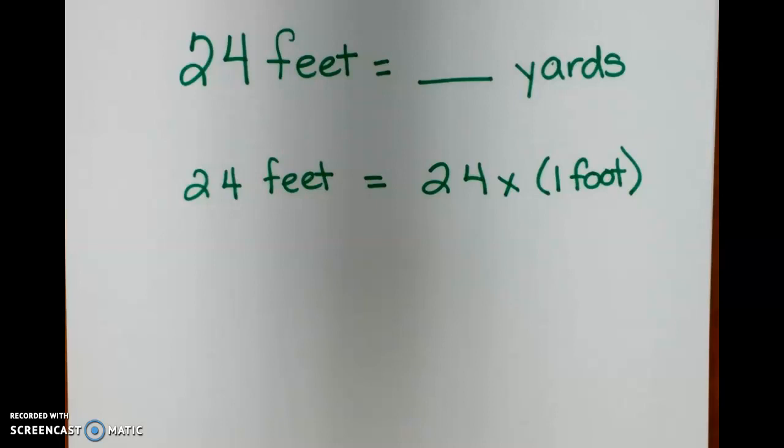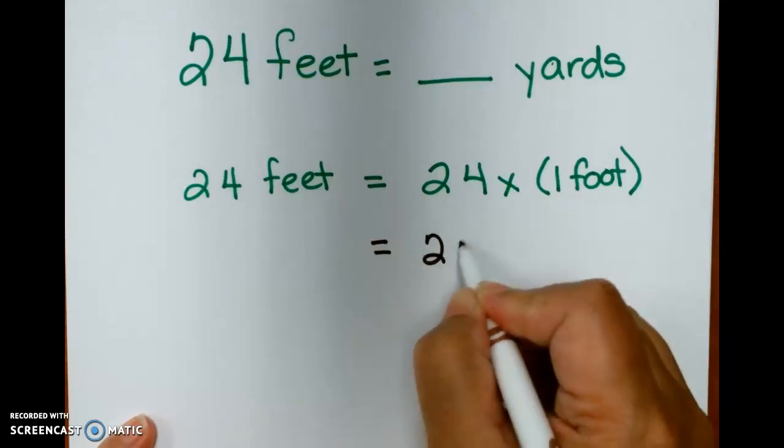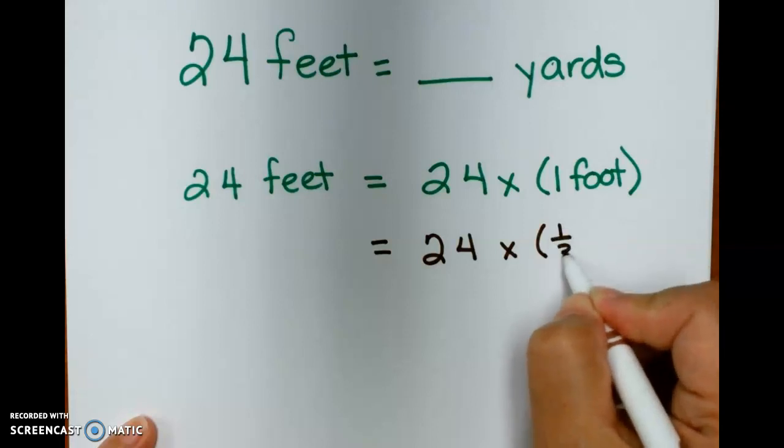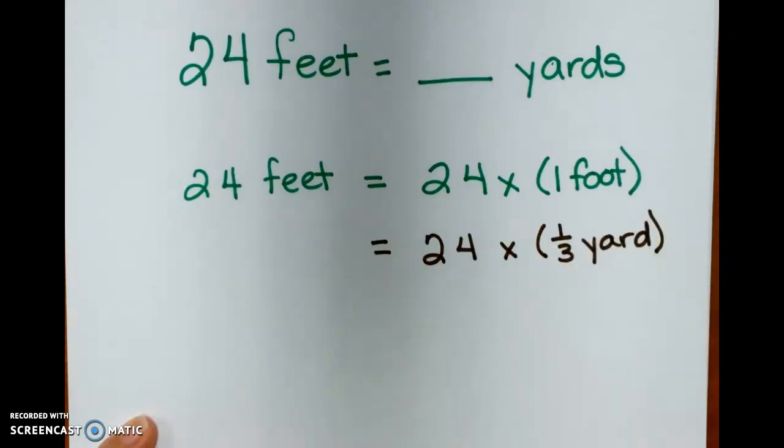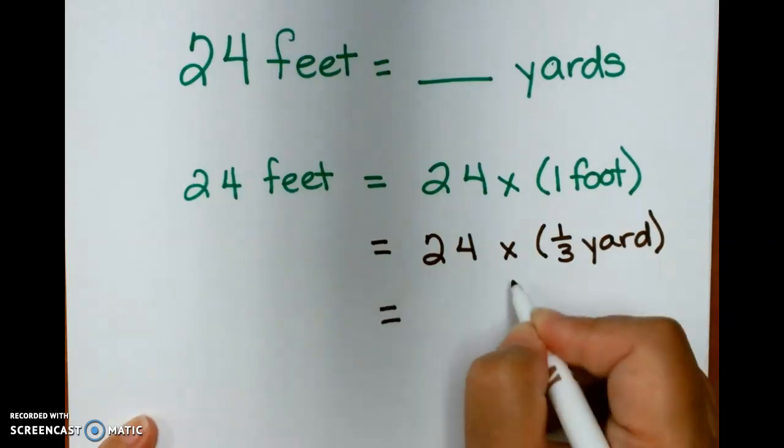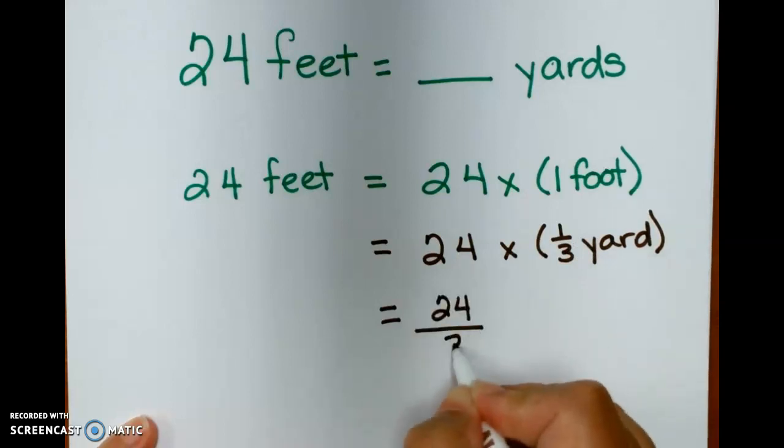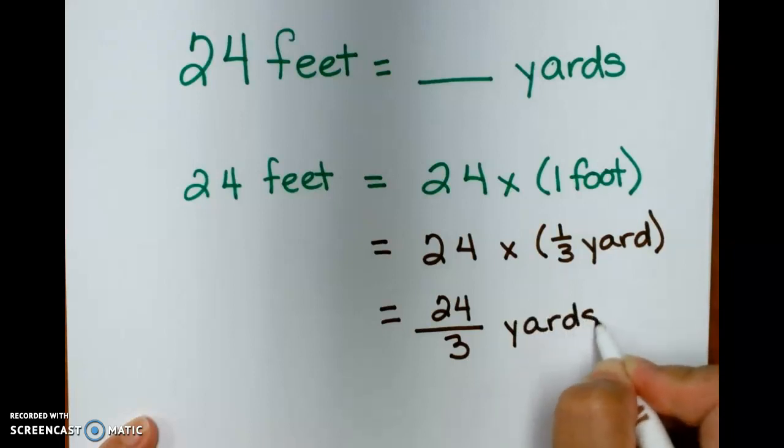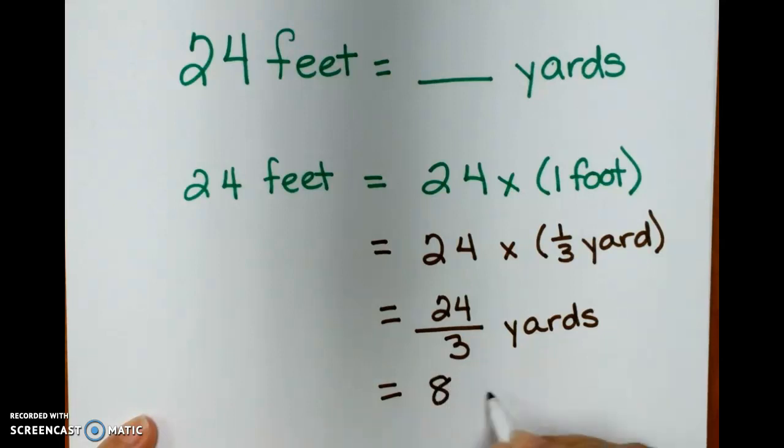Okay, let's keep going. So our next example is 24 feet equals how many yards? So again, I have 24 feet can be renamed as 24 times one foot. How many feet are in a yard? There are three feet in one yard. So I can also rename this as 24 times one third yard. So it's one third of a yard. And when I multiply that, 24 times one third is 24 thirds yard, which equals 8 wholes. So 24 feet equals 8 yards.